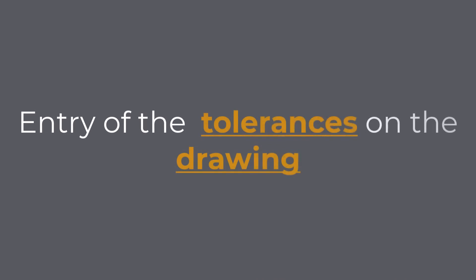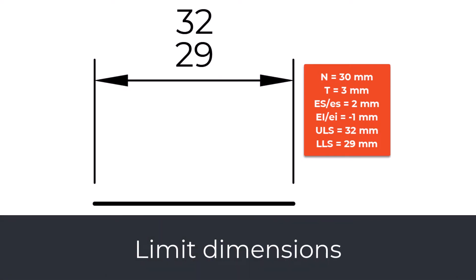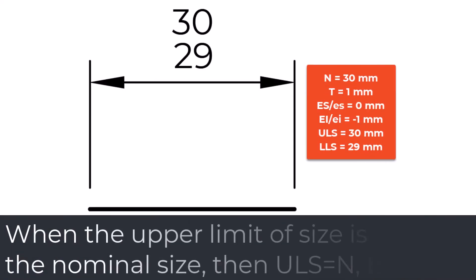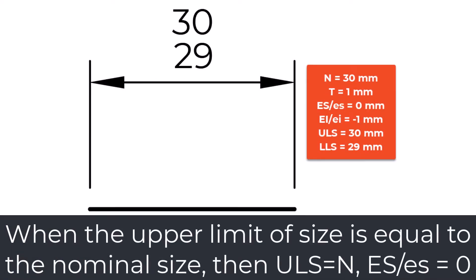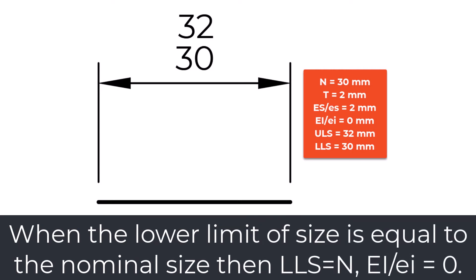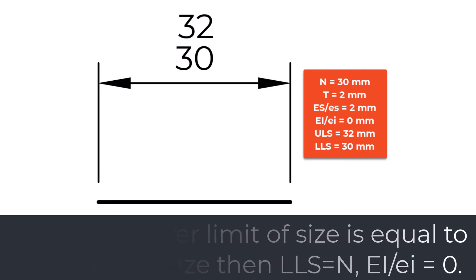Entry of tolerances on the drawing. When defining tolerances on the engineering drawing, we can enter them in a few different ways. Limit dimension: instead of the nominal size and limit deviation, we enter the upper limit of size (ULS) and the lower limit of size (LLS). We could also have the case where one of the limit deviations equals zero. When the upper limit of size equals the nominal size, then ULS = N and ES equals zero. When the lower limit of size equals the nominal size, then LLS = N and EI equals zero.